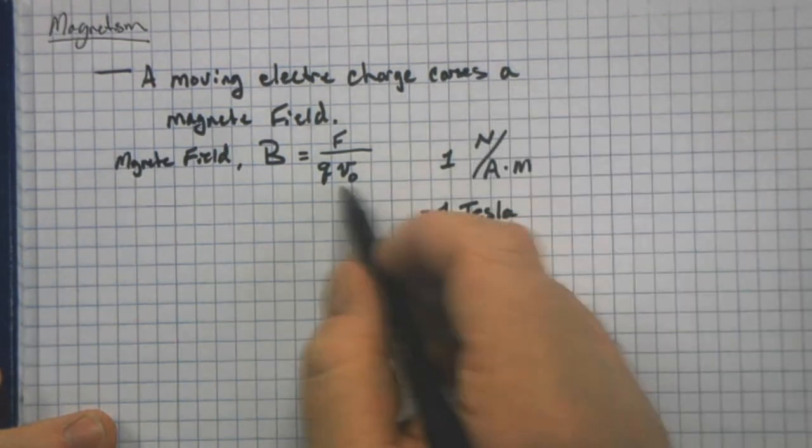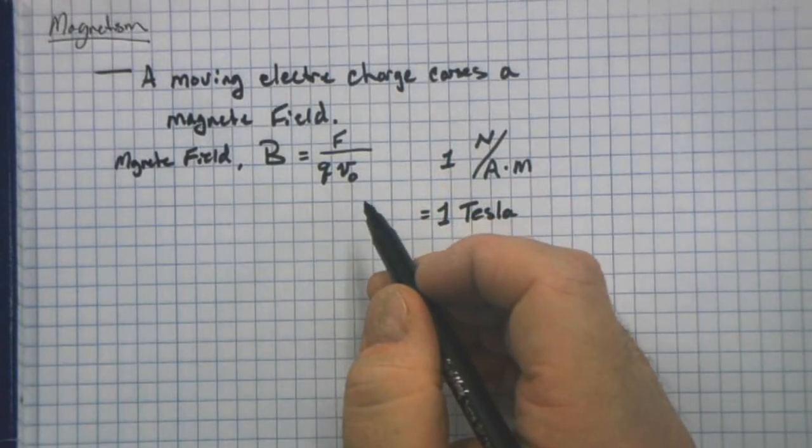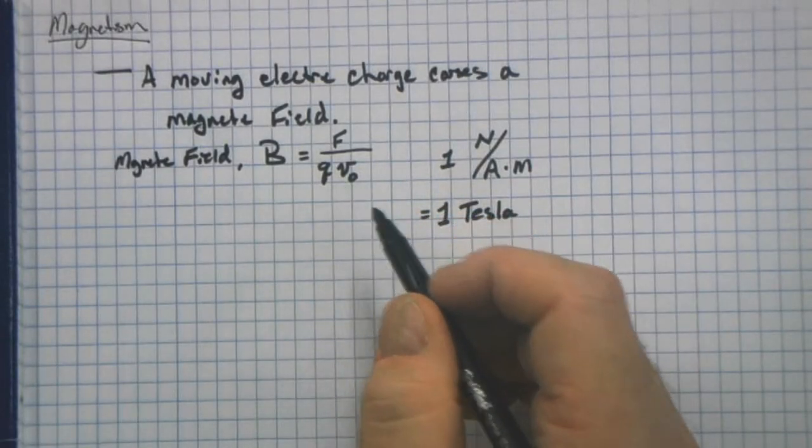F is Q and V-naught, so its initial speed, essentially. The speed of the charged particle.